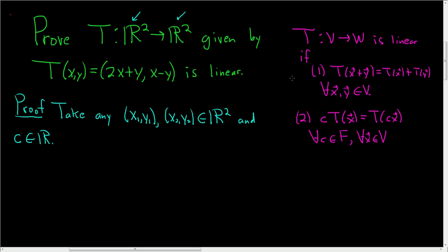And we'll start by checking the first condition very carefully. This is really an exercise in notation. So we have T of the sum of the vectors. So x1, y1, plus x2, y2. This is our x right here. This is our x, and this is our y.